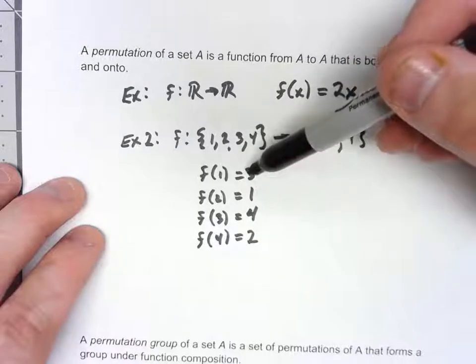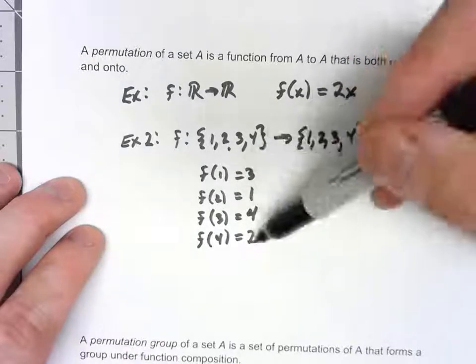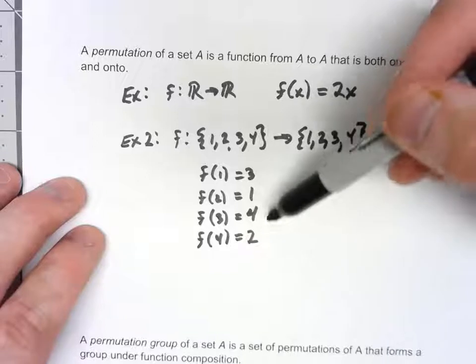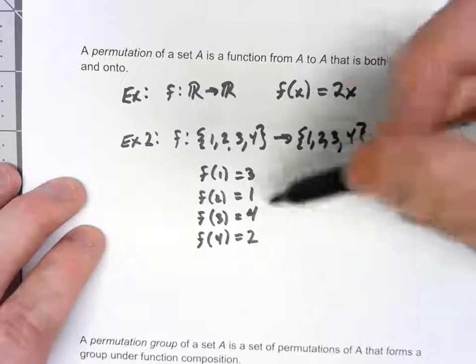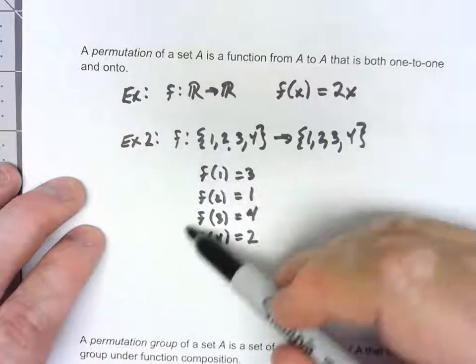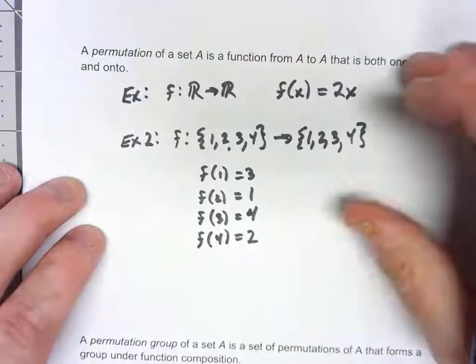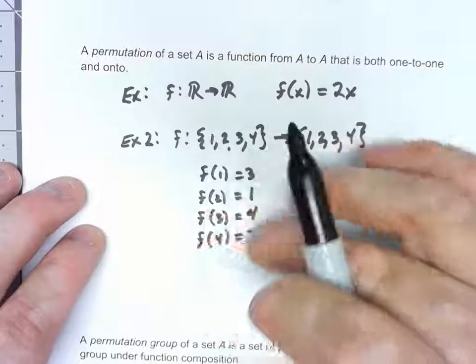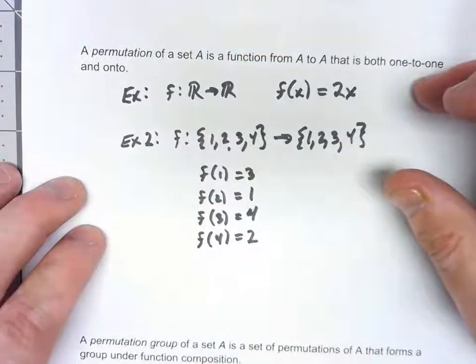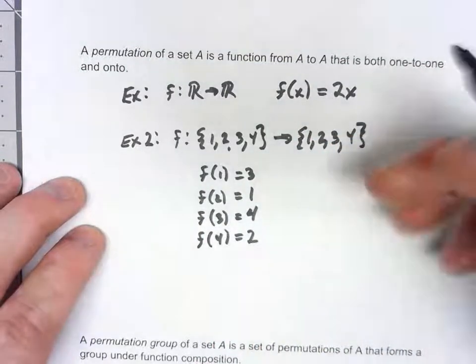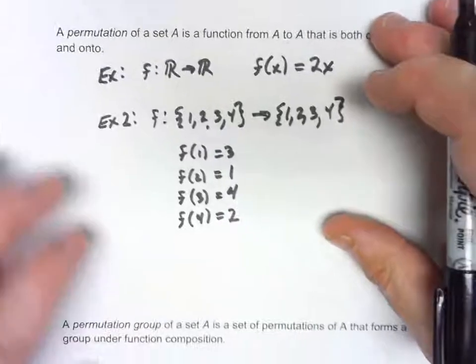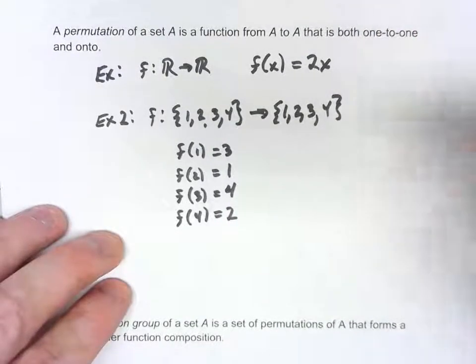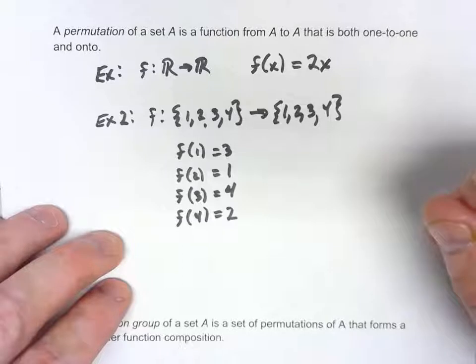Because it's one-to-one and onto, every one of these has to be different for what it maps to. Now, this is a perfectly fine permutation, but this notation of kind of just writing out what every function element is, is kind of hard to work with. So we're going to be learning a couple of different notations for this, and the first one of which is this.